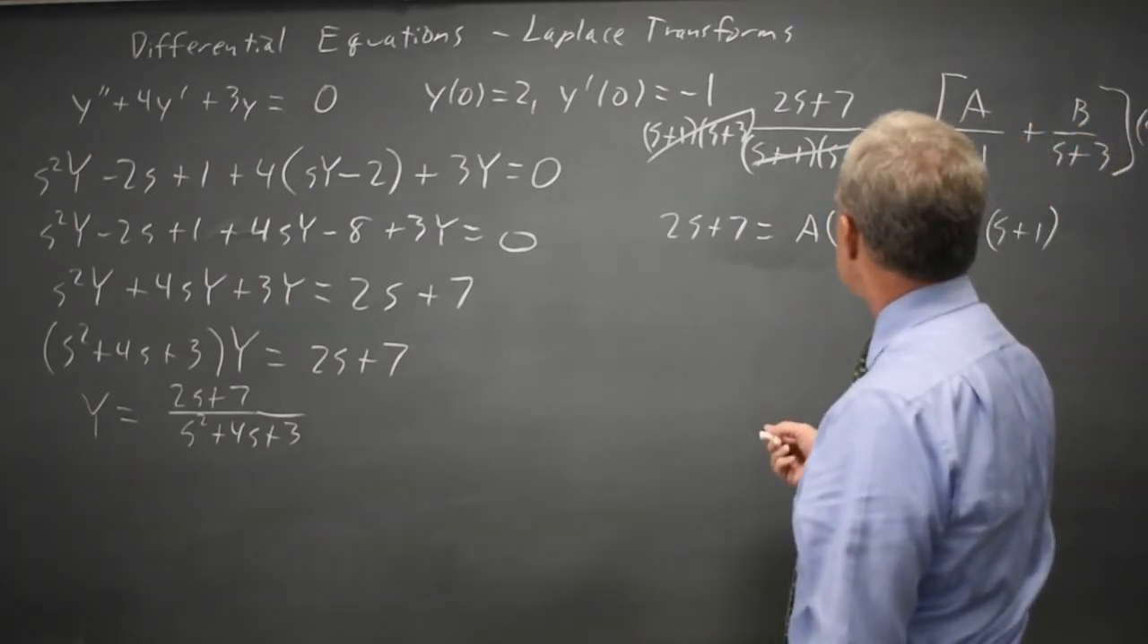Now I can solve this by choosing values for s or I can solve it as a system of equations, and I'll do both to show the options. If I choose s equals negative 1, that makes the B term zero. Twice negative 1 is negative 2 plus 7 is 5 equals A times negative 1 plus 3 is 2A. So A equals 5 halves.